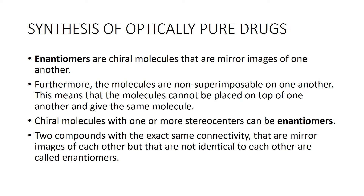To understand the optically pure drug concept, first we need to know enantiomers. You have all studied stereochemistry. Enantiomers are chiral molecules — mirror images of each other — two compounds with the exact same connectivity, mirror images of one another, but not identical to each other. The molecules are non-superimposable on one another, they cannot be placed on top of one another. These types of molecules are called enantiomers. Enantiomers are very important to synthesize optically pure drugs.